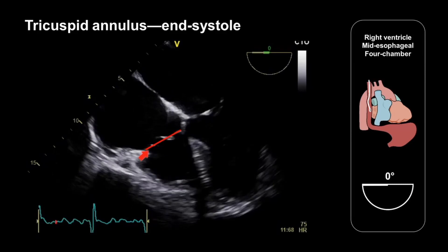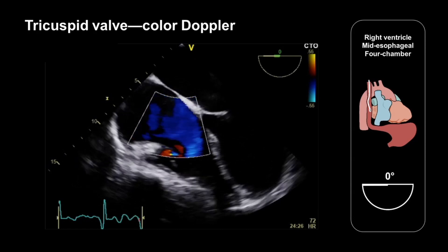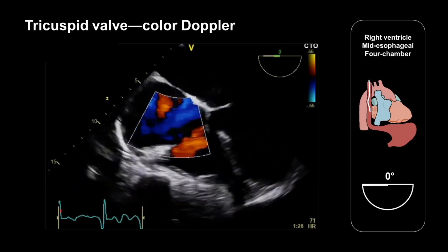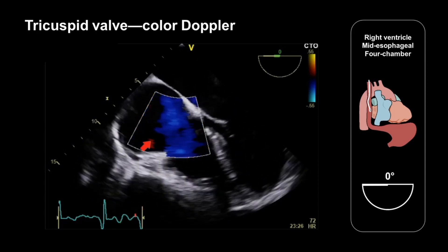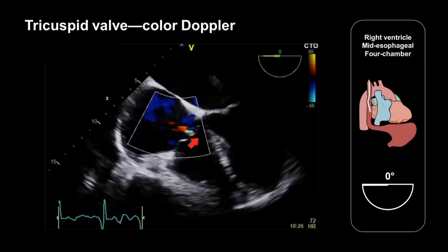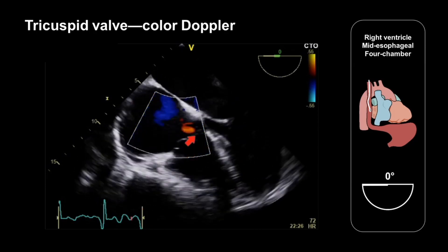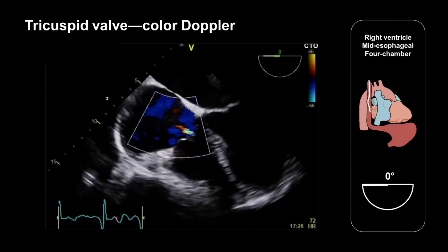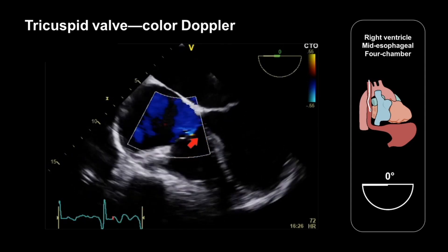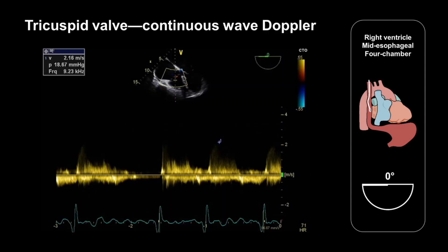And here's the same measurement between the hinge points made at end systole. Finally, we should undertake a Doppler assessment of flow through the tricuspid valve in the mid-esophageal four-chamber view. We should begin by applying colour Doppler to have a look at flow patterns. Here we can see a yellowy-red jet of tricuspid regurgitation through the valve — this is a relatively small and mild jet of regurgitation. If the alignment is appropriate, we can perform continuous wave Doppler flow through the tricuspid valve to obtain a spectral Doppler trace, and we can measure the peak velocity of a tricuspid regurgitant jet to assist in the estimation of pulmonary artery systolic pressure.